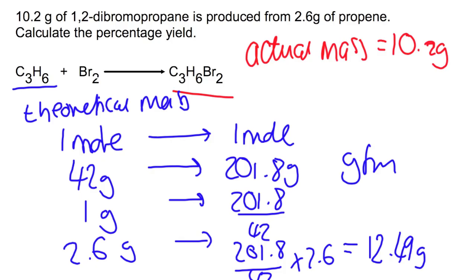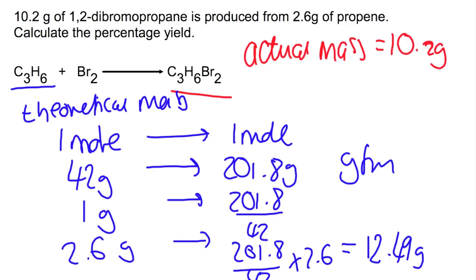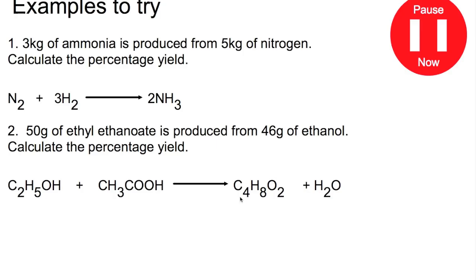If we put these into the percentage yield equation, we would have 10.2 divided by 12.49, all multiplied by 100, to give you a percentage yield of 81%. Pause the video now and try these examples.